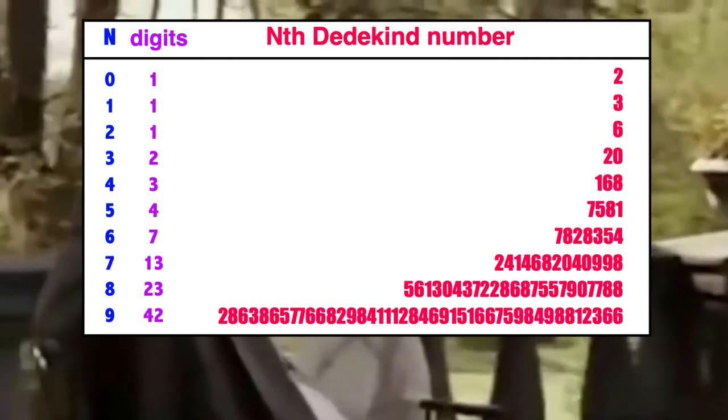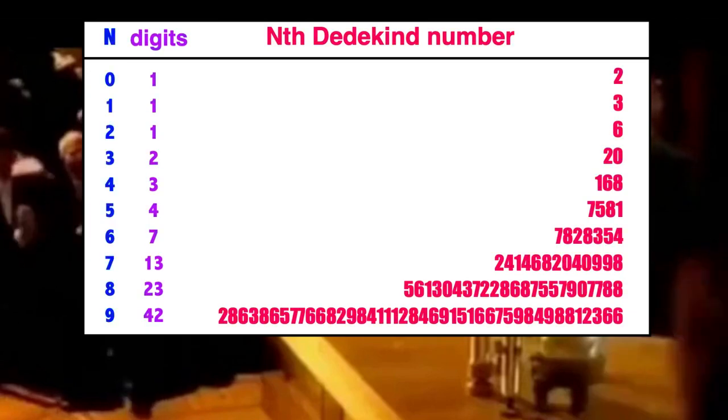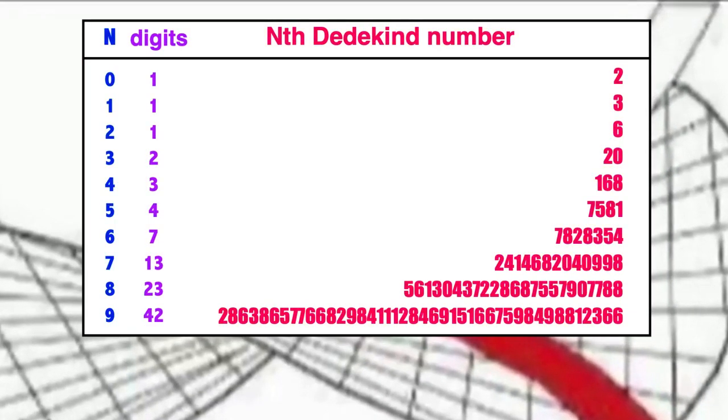These numbers become mind-bogglingly large as you progress in the series. In fact, the 8th Dedekind number already contains 23 digits.